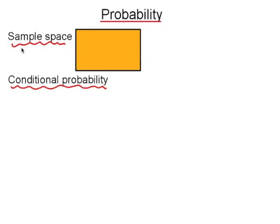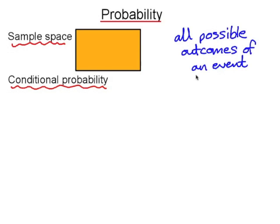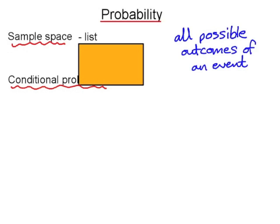In probability, the sample space refers to the list of all possible outcomes of an event. It can be a straightforward list, but the problem with that is a list can get quite long.